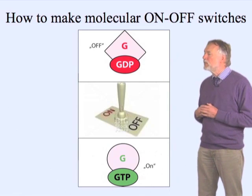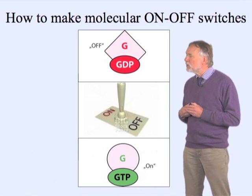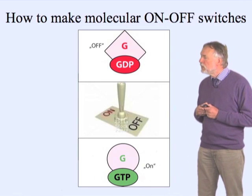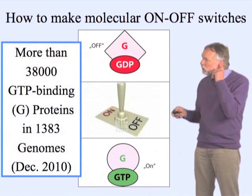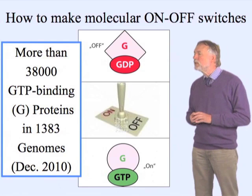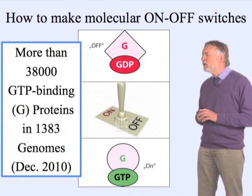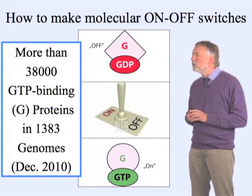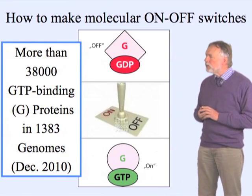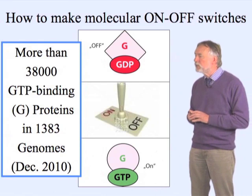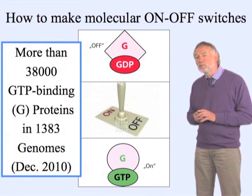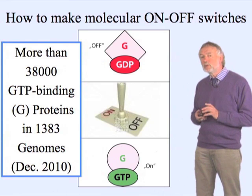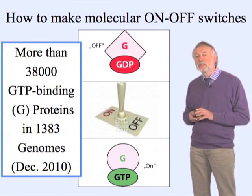In the GTP-bound state, it's on, and in the GDP-bound state, it's off. The difference between these two states is a single phosphate. To show that this is a very important class of proteins, you can find more than 38,000 GTP-binding proteins, or G-proteins, in about 1,300 genomes by December 2010. These are really important molecules found in all kingdoms of life, and some of these proteins are the most highly conserved proteins in nature.